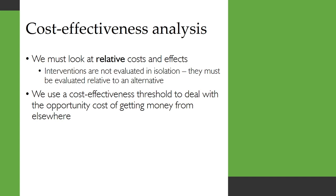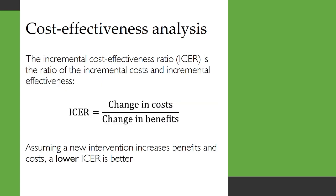We need to look at relative costs and effects. Interventions aren't evaluated in isolation; they must be evaluated relative to an alternative. And we use a cost-effectiveness threshold to deal with the opportunity cost of getting money from elsewhere. The incremental cost-effectiveness ratio, called the ICER, is the ratio of the incremental costs and the incremental effectiveness. As shown here in the formula, it's the change in costs divided by the change in benefits.